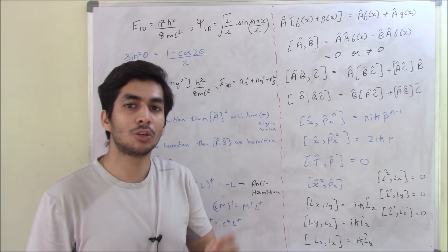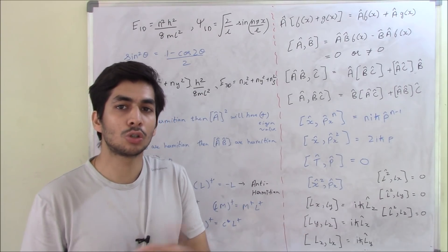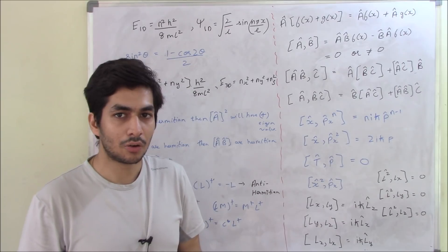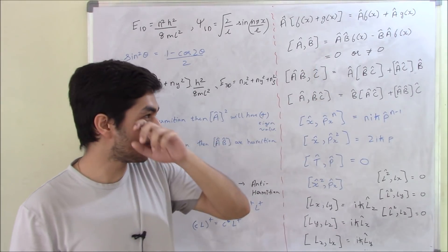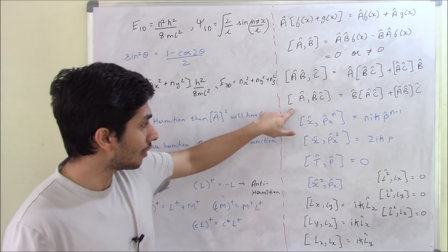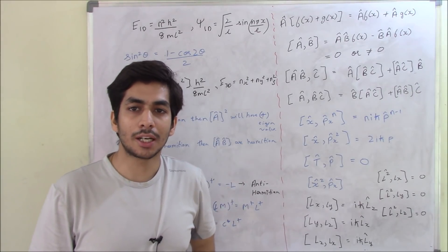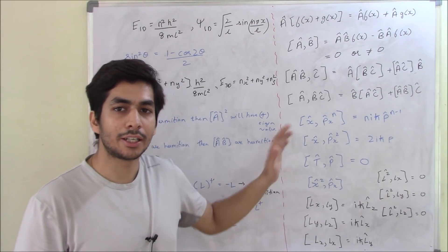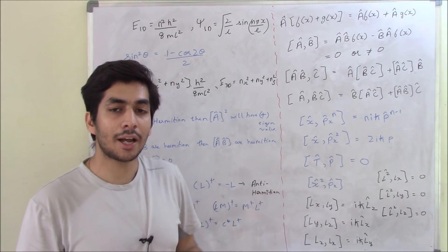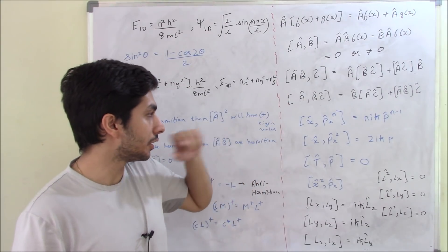That means either we will know the value of operator A or we know the value of operator B — we cannot know both values simultaneously. This is the significance of commutation. These two identities are very important; there have been exam questions asked using these identities.